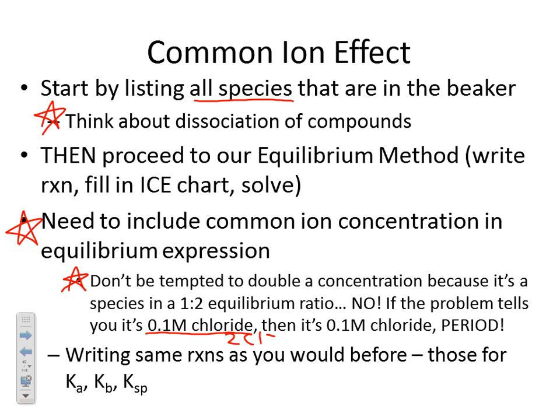In terms of writing reactions, you're writing the exact same reactions as before. In a common ion problem, you are not changing the reactions you write. If the problem gives you a Ka value, you write a Ka dissociation reaction. If it gives you a Kb value, you write a Kb reaction. If it gives you a Ksp value, you write a Ksp reaction. We're using the same process — we just aren't necessarily starting with zero product anymore.